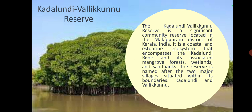The Kadalundi Vallikunna Reserve is a significant community reserve located in the Malappuram district of Kerala, India. It is a coastal and estuarine ecosystem that encompasses the Kadalundi River and its associated mangrove forests, wetlands and sandbanks. The reserve is named after the two major villages situated within its boundaries, Kadalundi and Vallikunna.